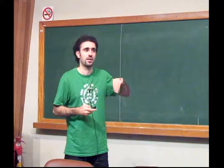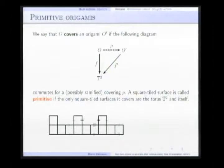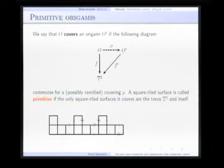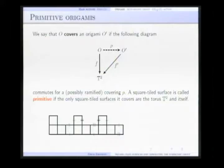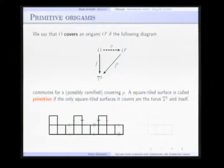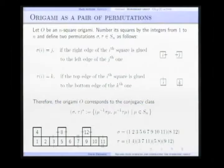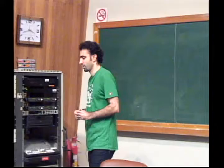The definition of square-tiled surfaces as a ramified covering of a torus can easily give another definition of the origamis which are primitive. An origami covers another origami if this diagram commutes for possibly ramified covering P. And the square-tiled surface is called primitive if there is no intermediate coverings except the torus itself and the surface, except two trivial coverings. For instance, the origami covers these ones, and so it's not primitive.